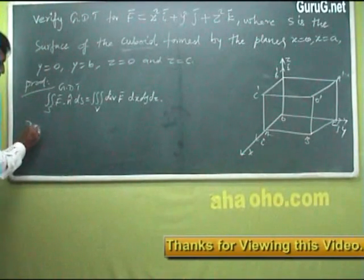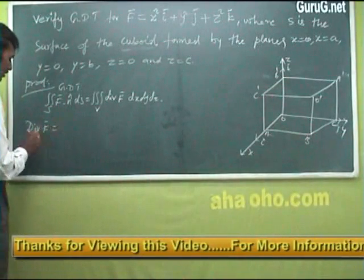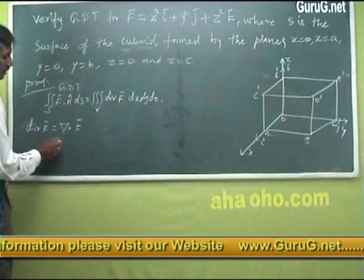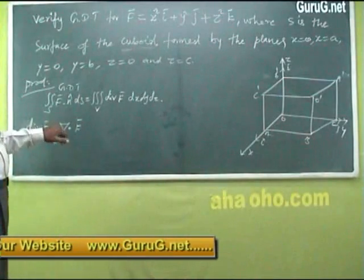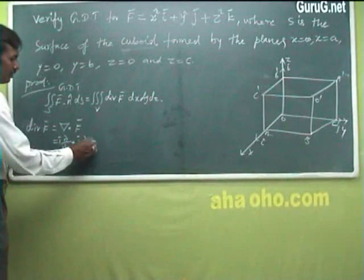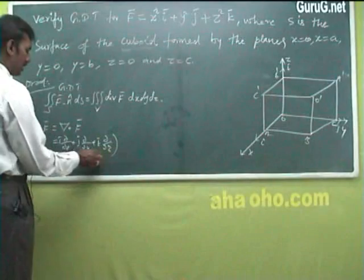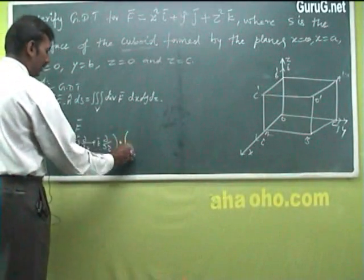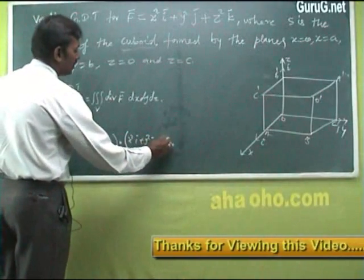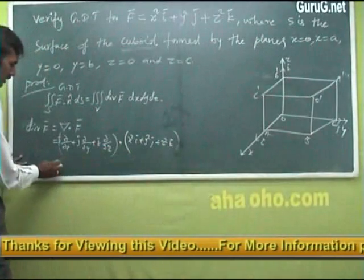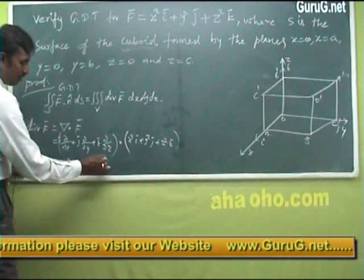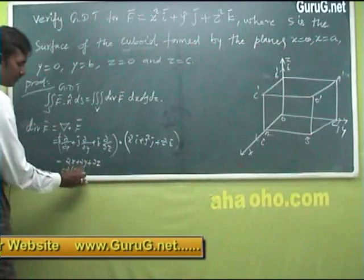For the right-hand side, we compute divergence of F. Del dot F equals (∂/∂x)i + (∂/∂y)j + (∂/∂z)k dotted with x²i + y²j + z²k. Taking the partial derivatives: ∂/∂x of x² plus ∂/∂y of y² plus ∂/∂z of z² gives 2x + 2y + 2z, which equals 2(x + y + z).